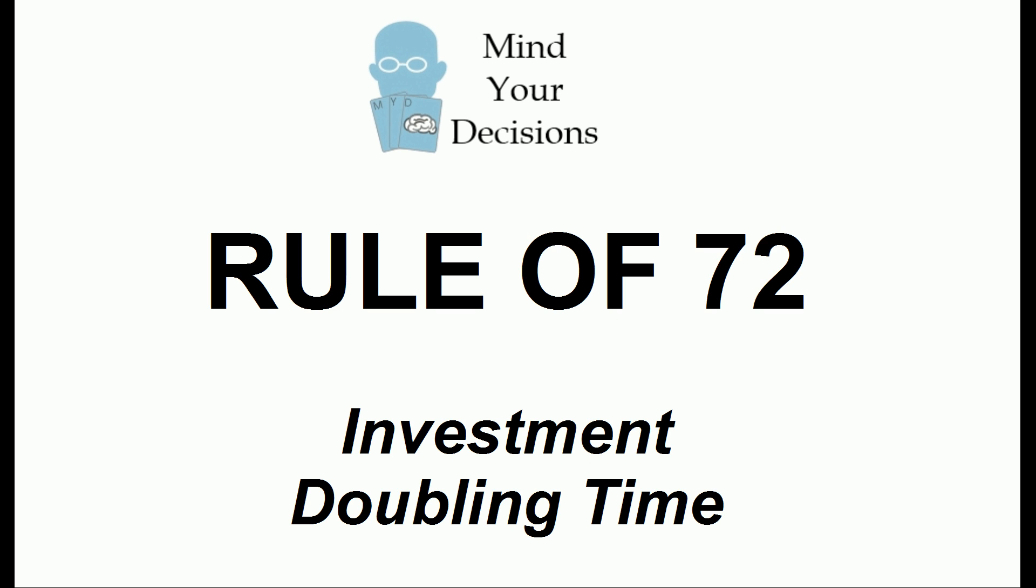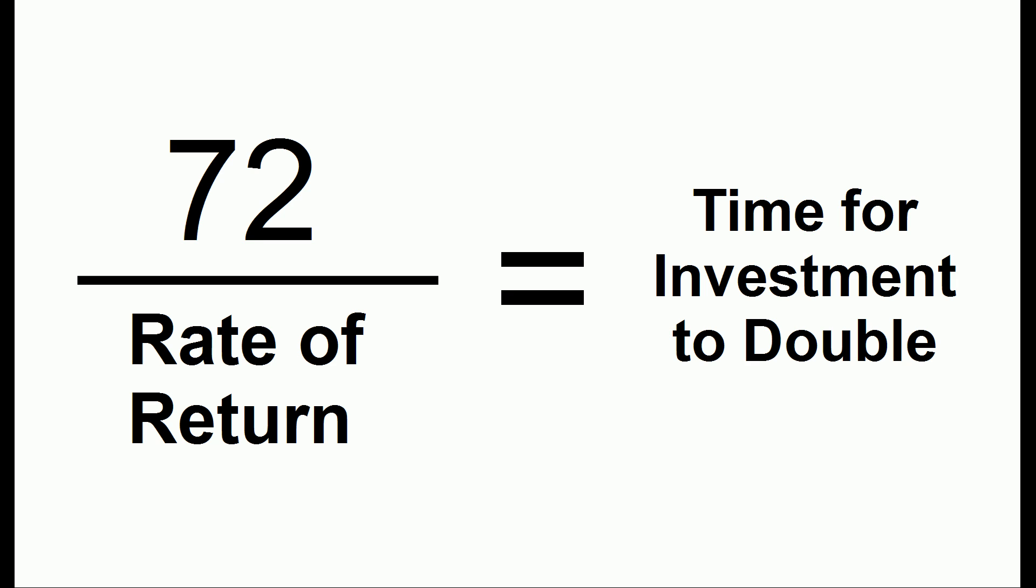Hi, this is Presh Talwalkar, and today I'm going to explain the rule of 72, which is a formula for how fast your investment will double. The formula is that 72 divided by the rate of return is the time for your investment to double.